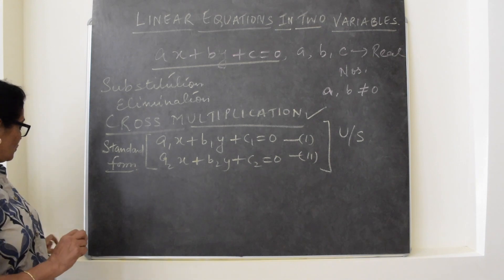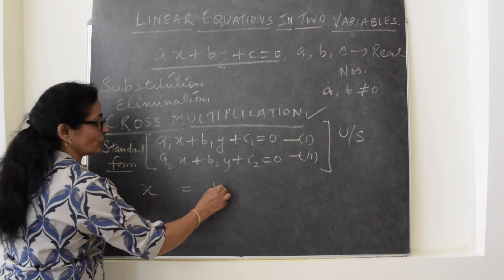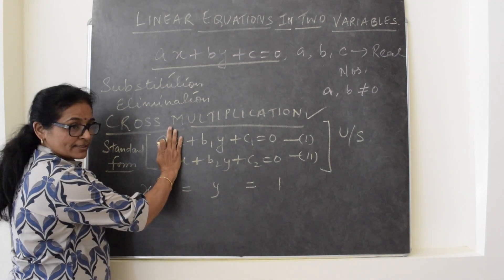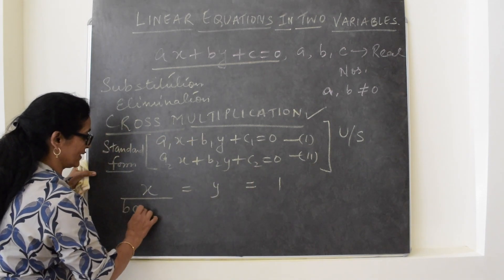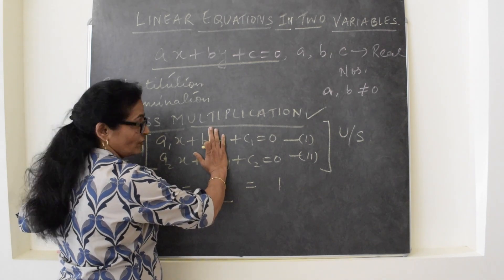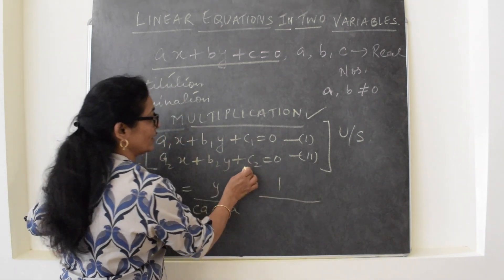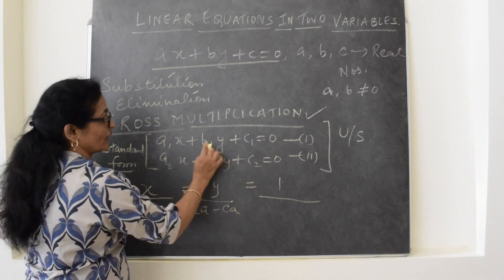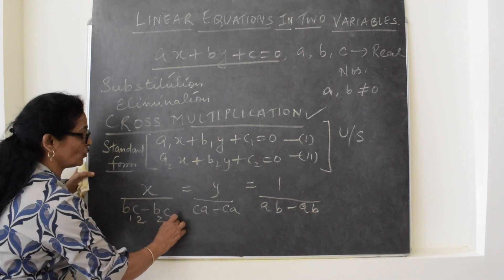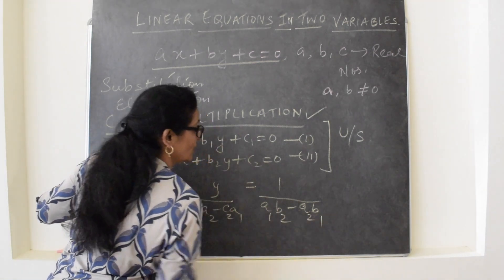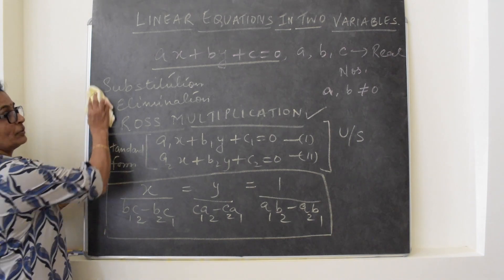After this, we will write the rule. We write x equal to y equal to 1. When we write x, we hide the coefficients of x — what is left are b and c, so we write b1c2 minus b2c1 under x. Then, hiding the coefficient of y, what is left is c and a, so we write c1a2 minus c2a1. When we write the constant 1, we hide c1 and c2, and what is left are a and b, so we write a1b2 minus a2b1. The subscript pattern follows 1, 2, 2, 1 for each term. This is the rule by which we can solve linear equations in two variables by the cross multiplication method.